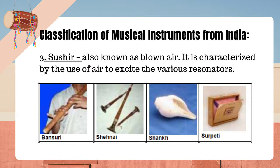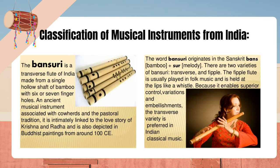Sushir, also known as blown air, is characterized by the use of air to excite various resonators. The bansuri is a transverse flute of India made from a single hollow shaft of bamboo with six or seven finger holes. An ancient musical instrument associated with cowherds and the pastoral tradition, it is intimately linked to the love story of Krishna and Radha and is also depicted in Buddhist paintings from around 100 CE. The word bansuri originates in the Sanskrit: bans (bamboo) plus sur (melody). There are two varieties of bansuri — transverse and fipple. The fipple flute is usually played in folk music, while the transverse variety is preferred in Indian classical music.